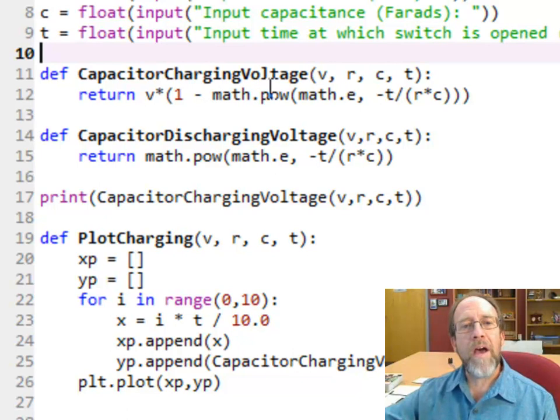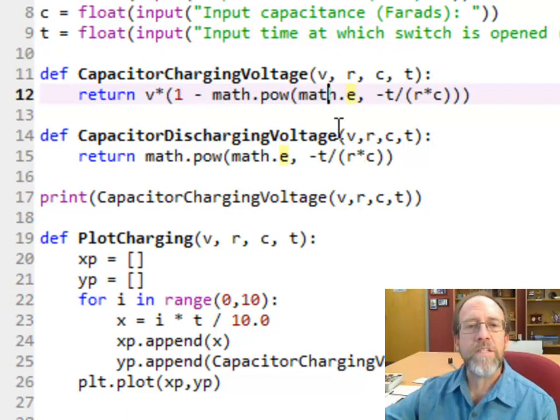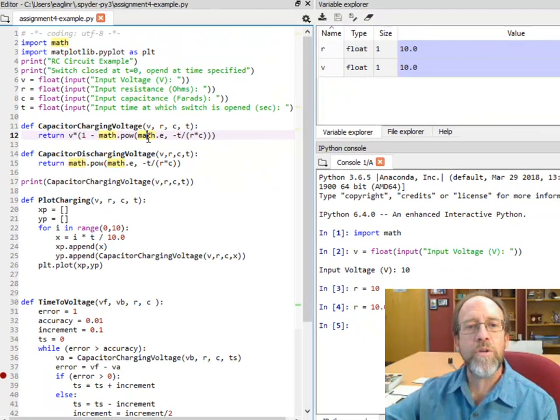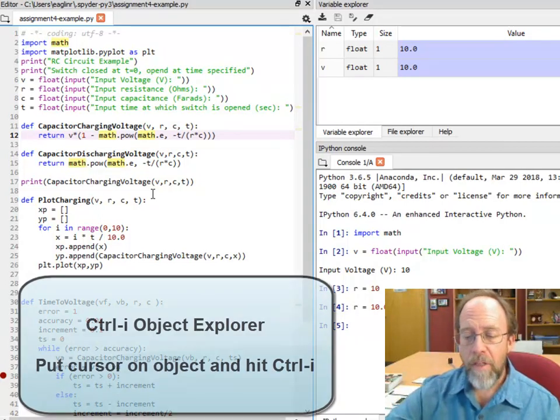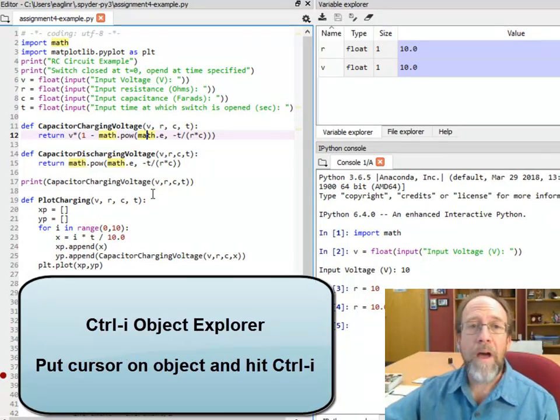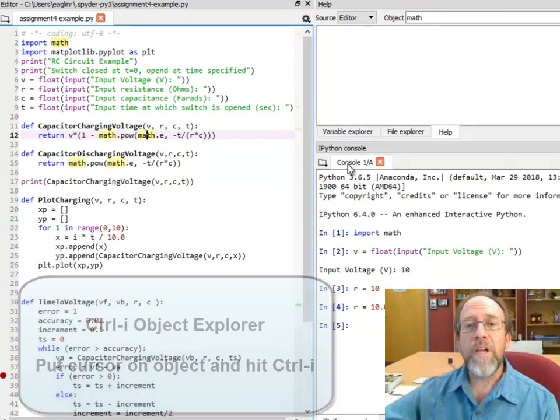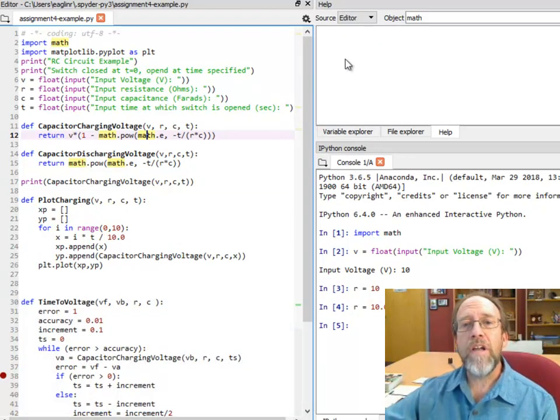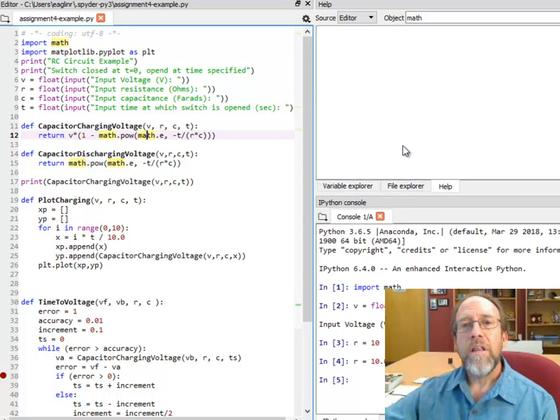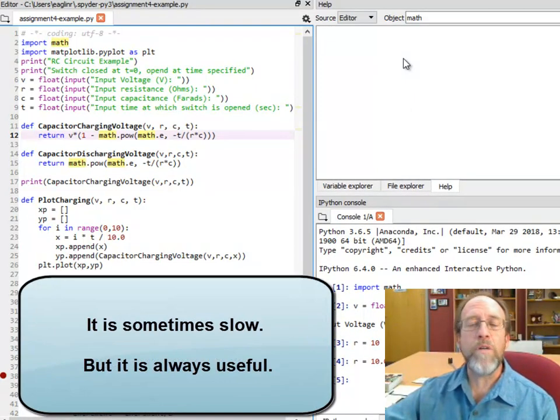The equation was simply the V, the voltage of the power supply, times one minus e to the minus t over RC. That's expressed in the function with the power function of math. I'm going to use one minus math.pow. Now I don't have the value of e, but yes I do, because math has the constant e. You can actually inspect these. Another way to do this is control I, which brings up an inspector that should show me the properties, the methods, what's in the object math.